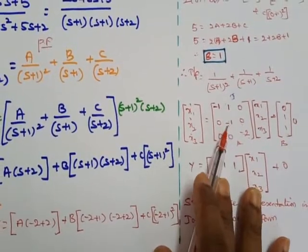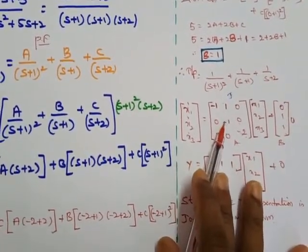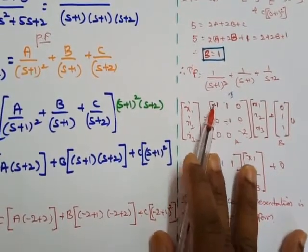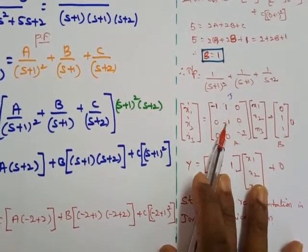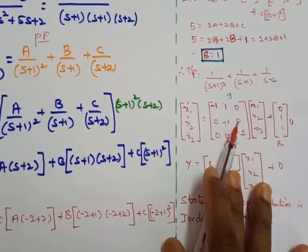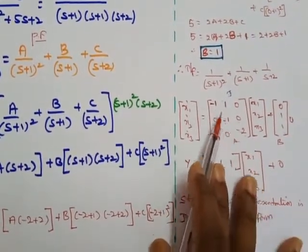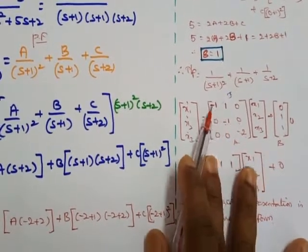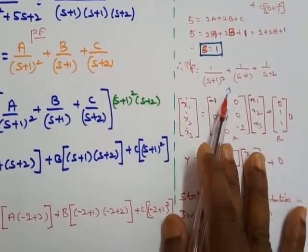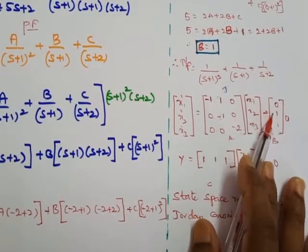Here, -1 and -1 are repeated poles. When poles are not repeated, only diagonal elements appear and the rest are zero. Since -1 is repeated, the element beside it in the Jordan matrix must be written as 1. So the matrix has -1, -1, -2 on the diagonal and a 1 beside the repeated -1 entry. For the B matrix, since only one pole is repeated, the first element is 0 and the remaining two are 1 and 1.